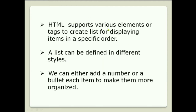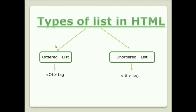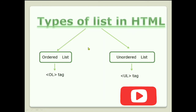HTML supports various elements or tags to create lists for displaying items in a specific order. A list can be defined in different styles — we can either add a number or a bullet to each item to make them more organized. There are two types of list tags in HTML: ordered list, meaning the OL tag, and unordered list, meaning the UL tag.